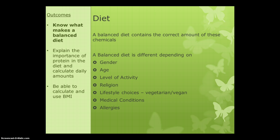Medical conditions can also affect your diet. For instance, diabetes is a condition where you can't control the amount of sugar in your blood — we'll talk about that more later. So if you eat too much sugar and you've got diabetes, you're going to have a problem. Allergies are obviously also going to affect your diet, because you don't want to eat anything that will cause you to go into anaphylaxis.